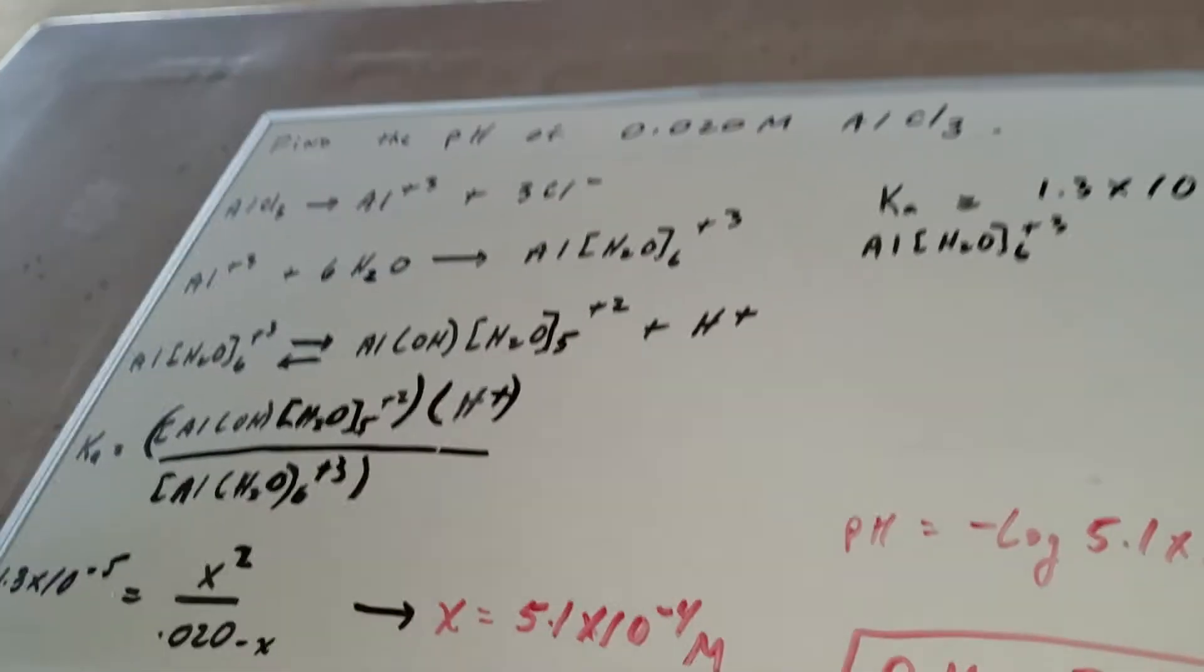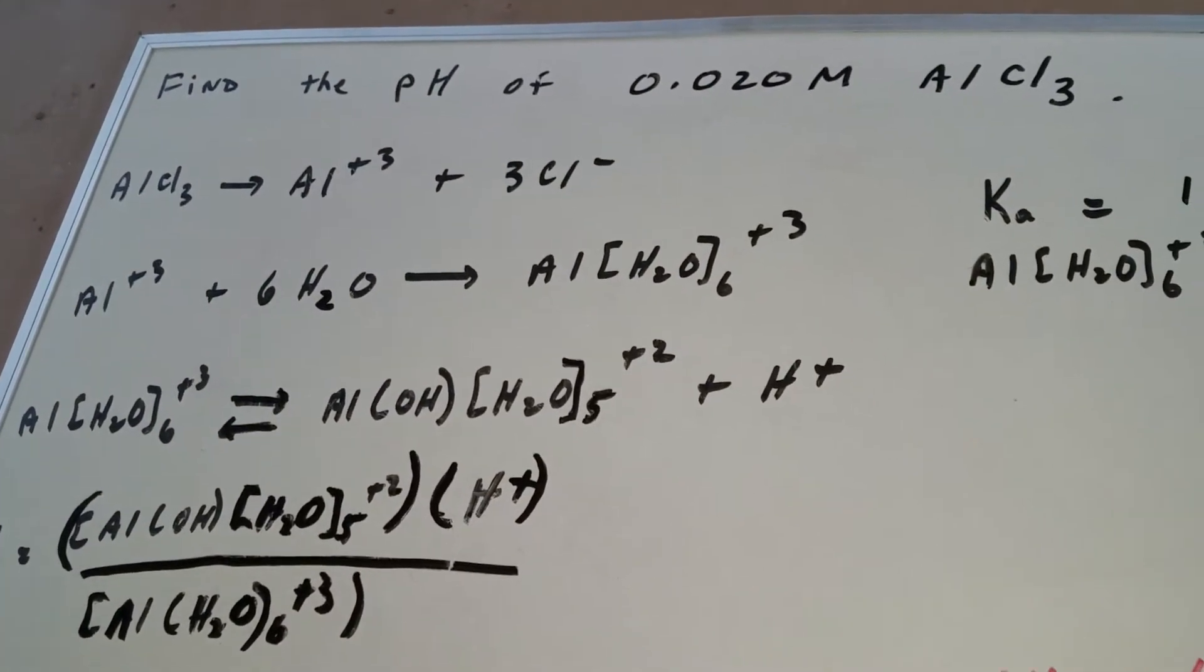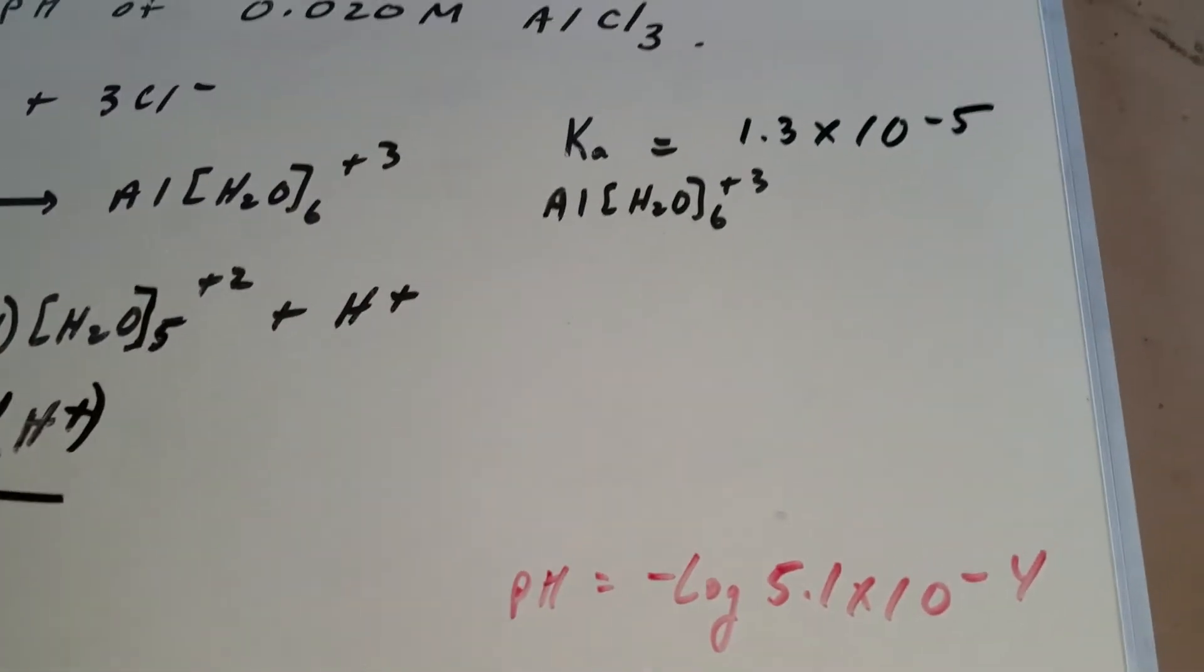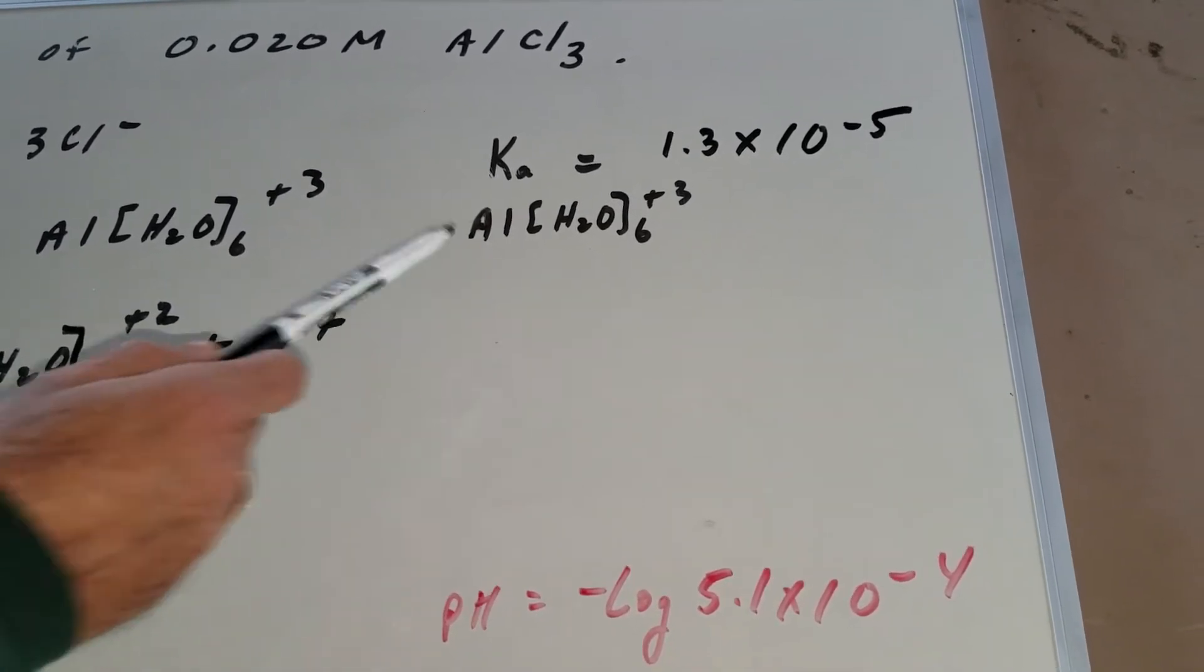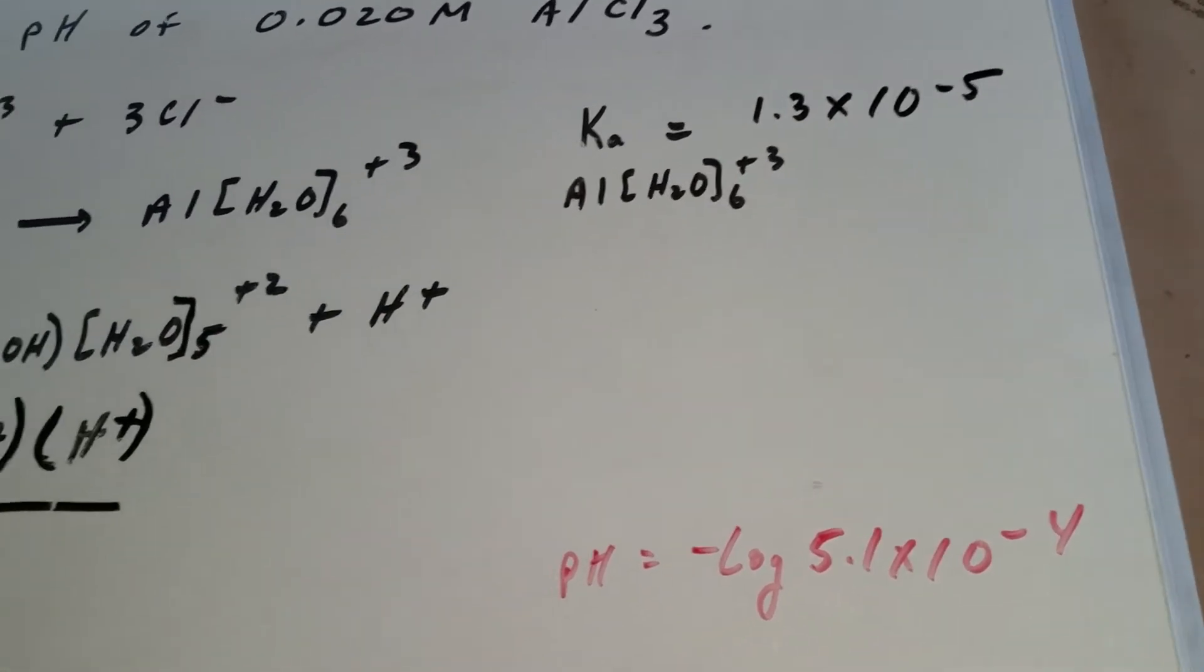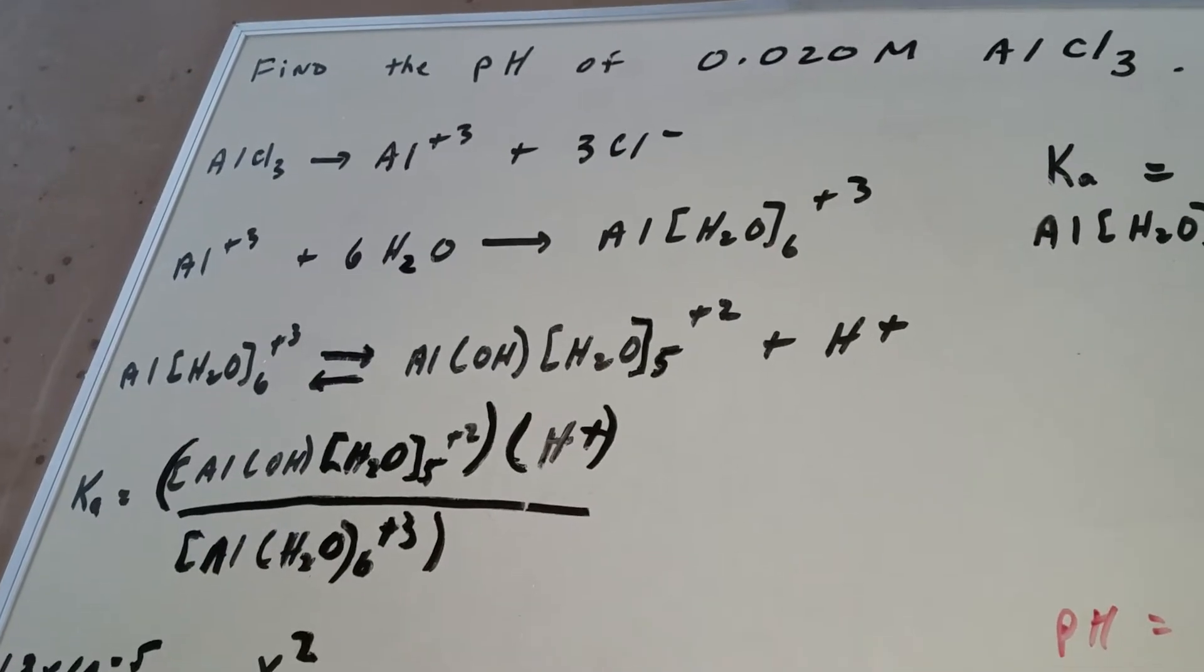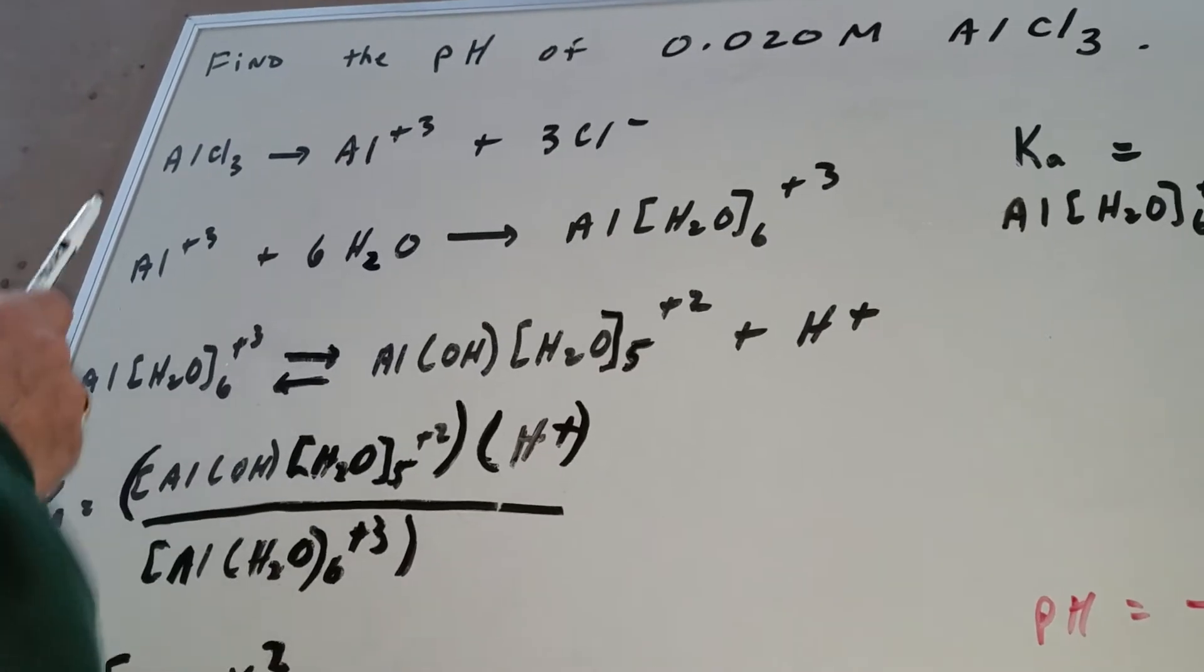Okay Dr. Romano, I want to get a 30. It says here to find the pH of a 0.020 molar aluminum chloride solution. The Ka is given as 1.3 times 10 to the minus 5. And they give you this species, aluminum with six waters attached to it. That in itself should give you a hint as to where to proceed.